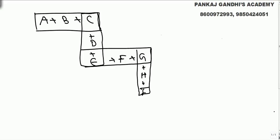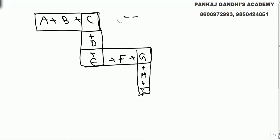The question states that A plus B plus C equals C plus D plus E, and we have four summations: ABC, CDE, EFG, and GHI. Each of them is 13.